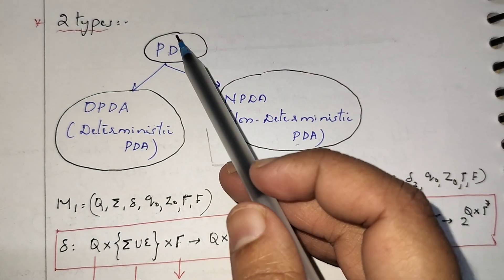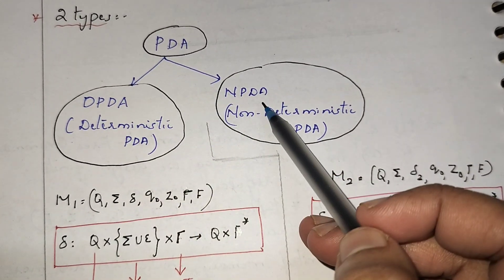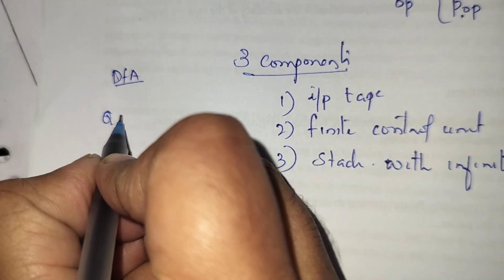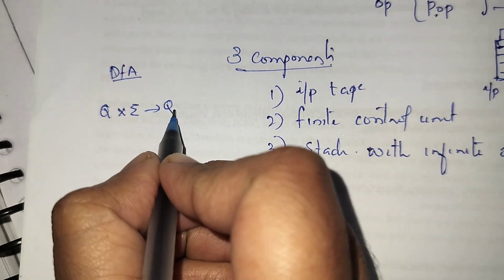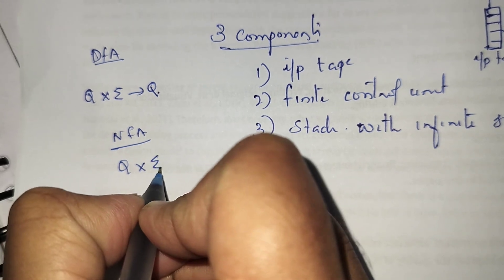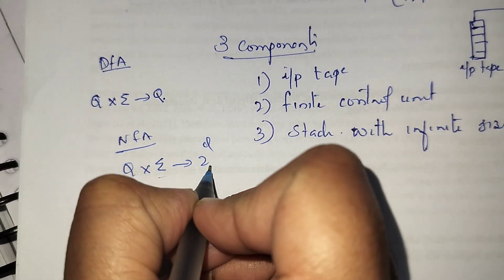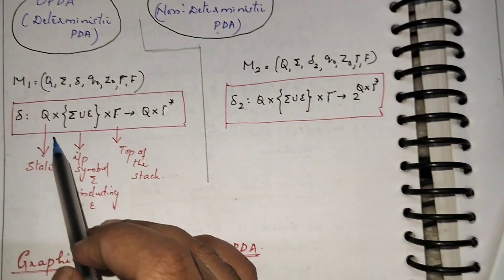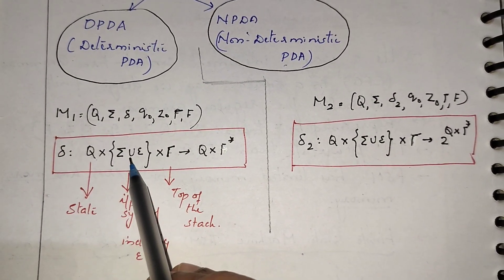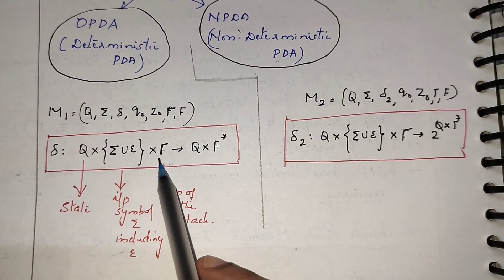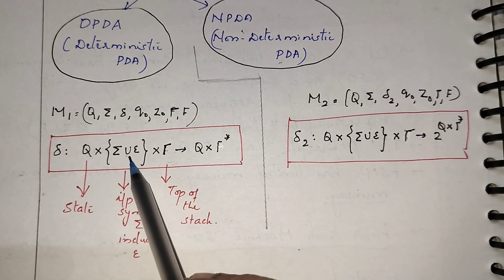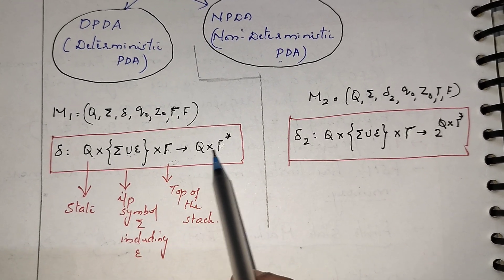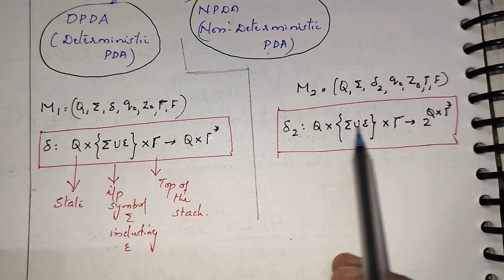There are two types of pushdown automata: DPDA (deterministic pushdown automata) and NPDA (non-deterministic pushdown automata) — similar to DFA and NFA for finite automata. In DFA a state on a particular input symbol goes to only one state; in NFA a state can go to more than one state. The difference between DPDA and NPDA is in the transition function: δ: Q × (Σ ∪ ε) × τ → Q × τ* for DPDA (one state), whereas NPDA maps to a set of states (2^Q).